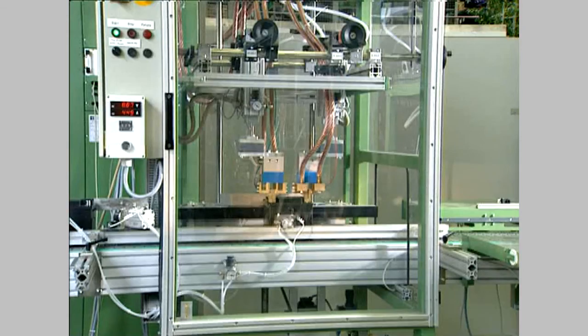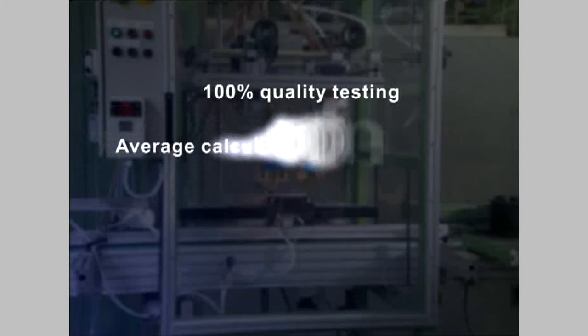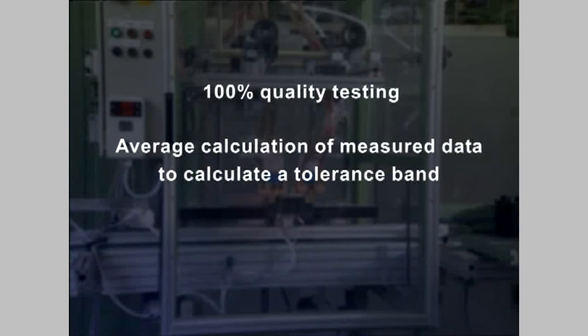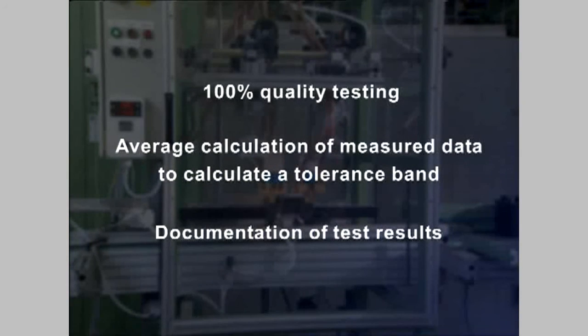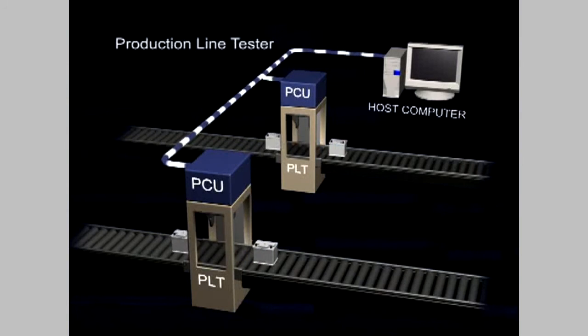Digatron production line testers offer many advantages: 100% quality testing of all batteries instead of spot checking, automatically updated test criteria for tolerances subject to production variations, documentation and long-term storage of test results, and network integration of several PLTs in extension to a quality assurance system.